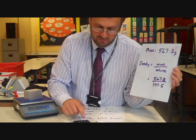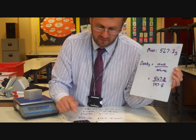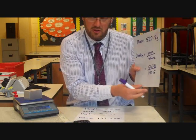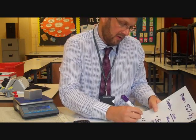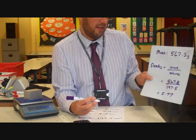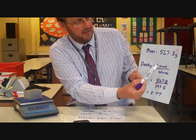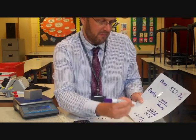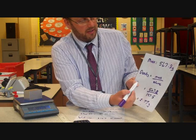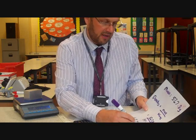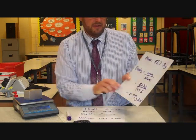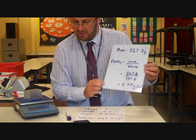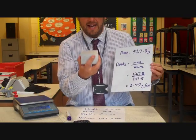547.8 divided by 197.5 gives us an answer of 2.77. The units — you need to think about the units: mass divided by volume. Our mass was in grams and our volume was in centimetres cubed, so the density is 2.77 grams per centimetre cubed for that aluminium block.